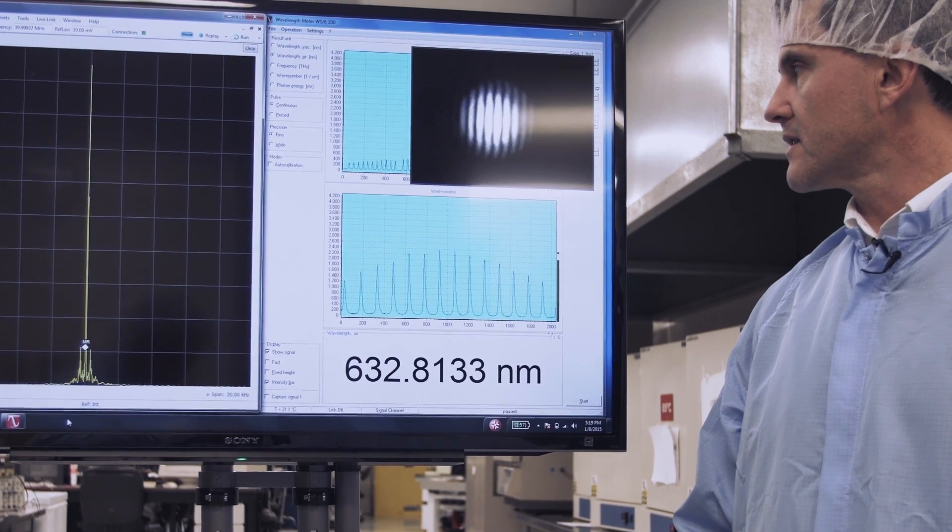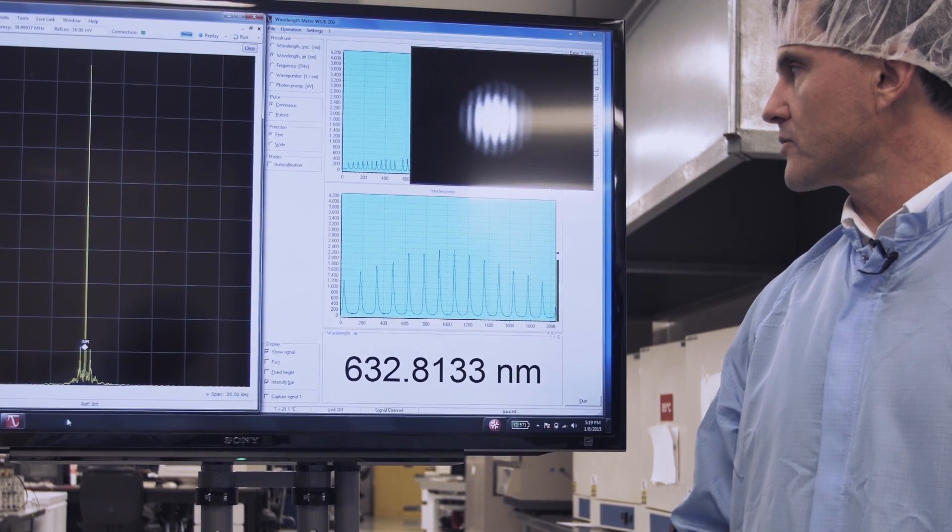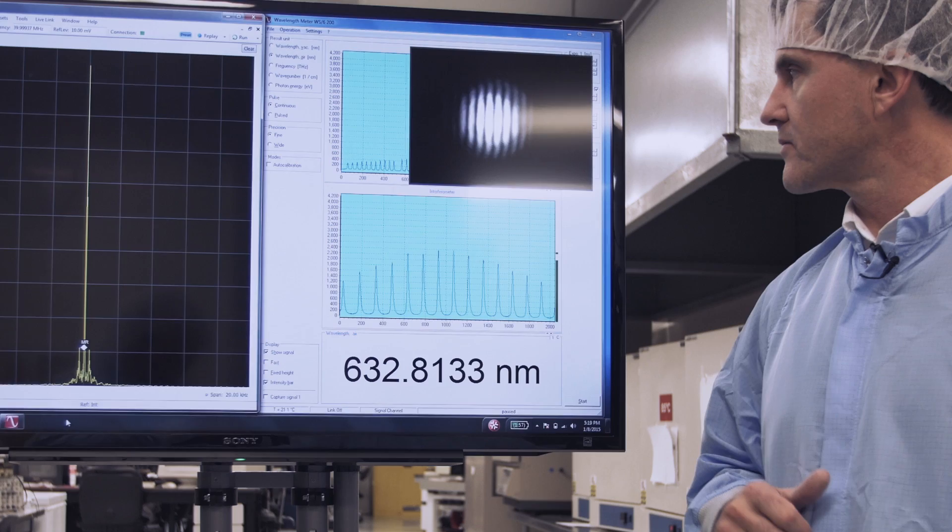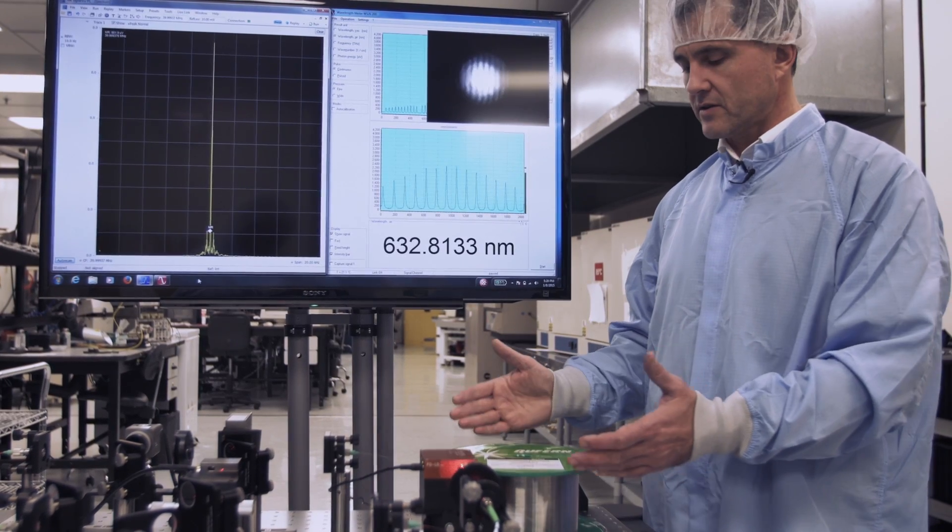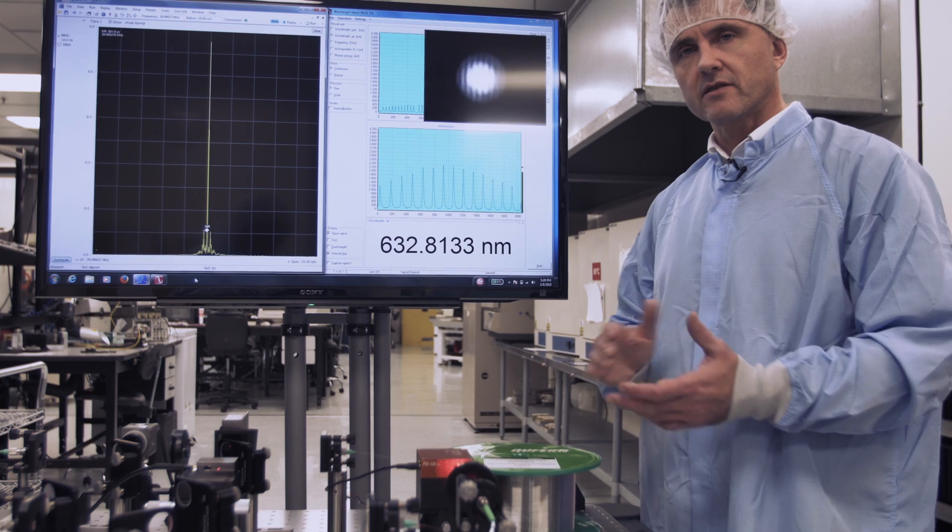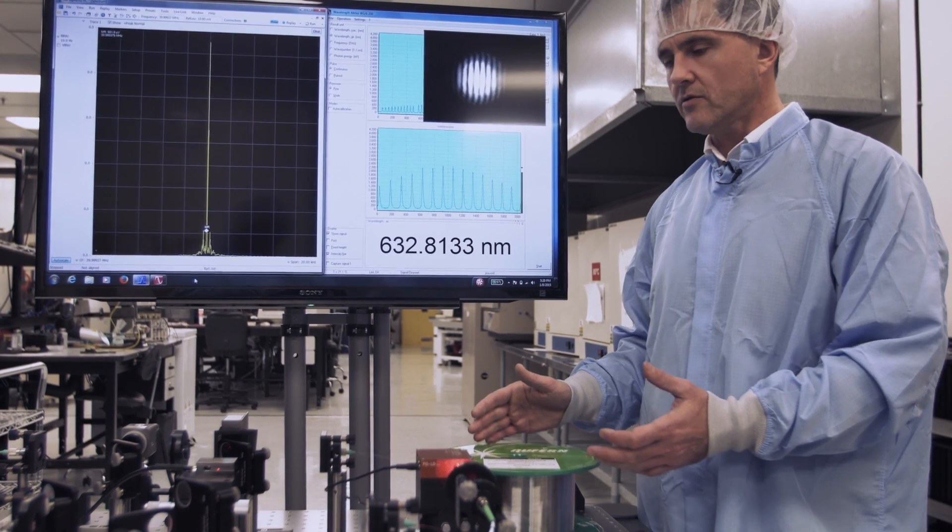The fringes are moving. You can see the visibility is changing, and this is quite normal because this long spool of fiber is a very sensitive sensor for temperature, vibrations, and so on.